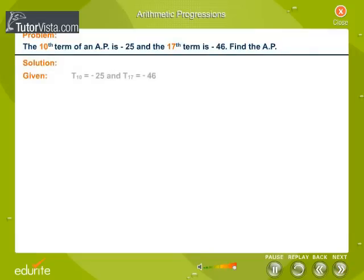Solution. Given the 10th term T10 equals minus 25 and the 17th term T17 equals minus 46. We know that the nth term of an AP is given by Tn is equal to a plus (n minus 1) into d.